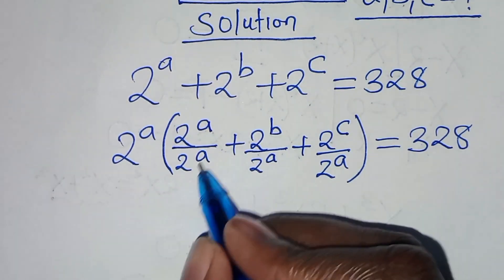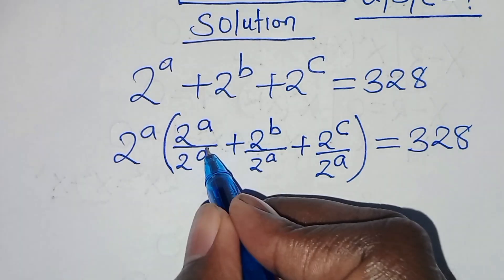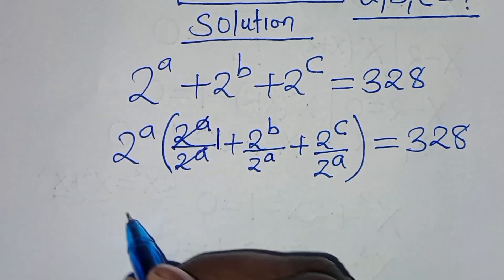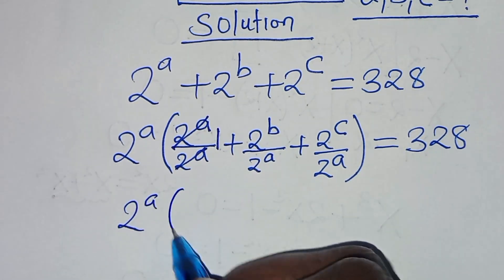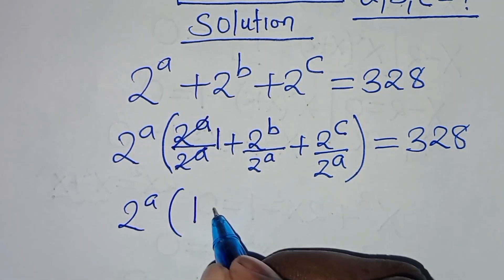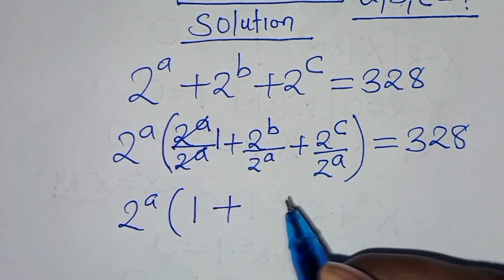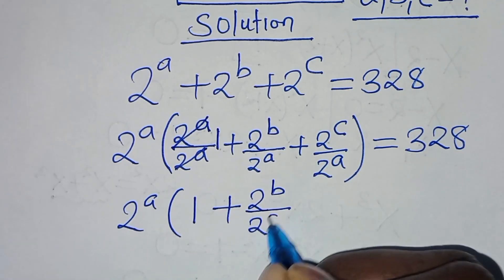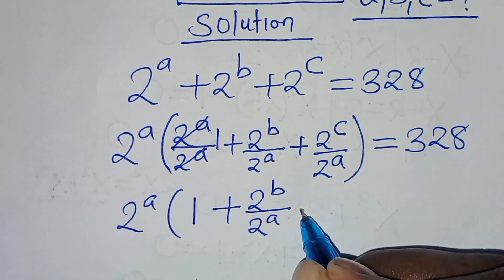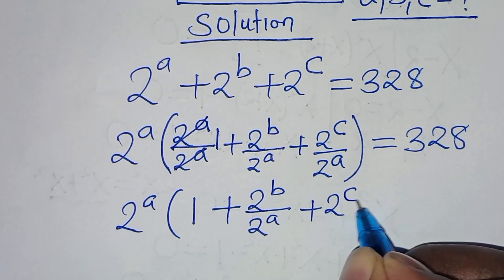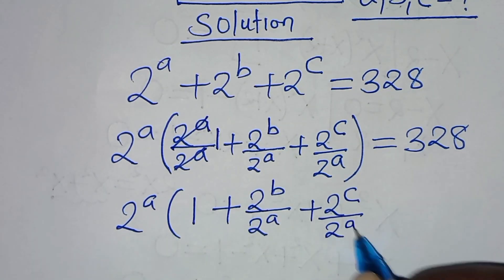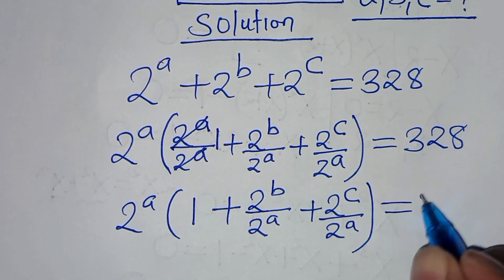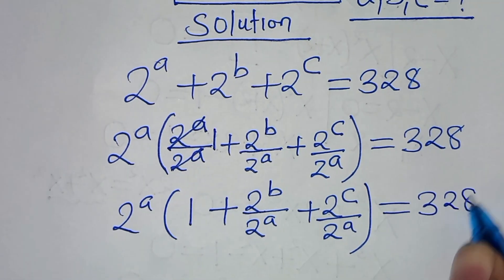Simplifying, we have 2^a into the parentheses: 1 plus 2^(b-a) plus 2^(c-a), and this equals 328.